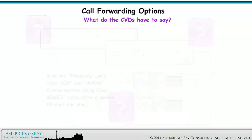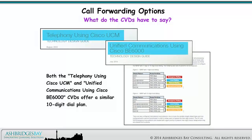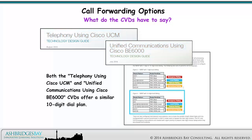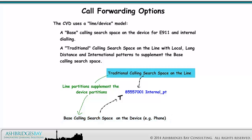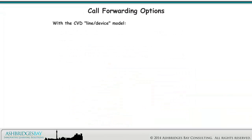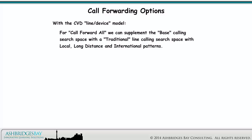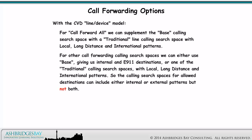Both the telephony using Cisco UCM and Unified Communications using Cisco BE6000 CVDs offer a similar 10-digit dial plan. The CVD uses a line device model with a base calling search space on the device for E911 and internal calling, and a traditional calling search space on the line with local, long distance, and international patterns to supplement the base. For call forward all, we can supplement the base CSS with a traditional line CSS with local, long distance, and international patterns. For other call forwarding calling search spaces, we can use either base, giving us internal and E911 destinations, or one of the traditional calling search spaces. So the CSS for allowed destinations can include either internal or external patterns, but not both. That's crazy talk — this solution doesn't meet Enterprise 20 requirements.